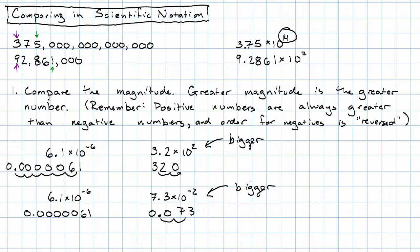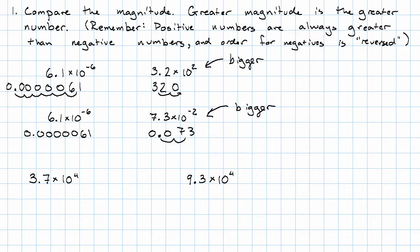All right, what if comparing the magnitude doesn't help us? What if we have these two numbers? What if we have 3.7 times 10 to the fourth versus 9.3 times 10 to the fourth? Here you see the magnitudes are the same.